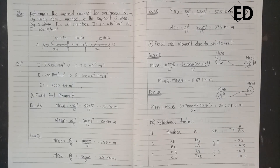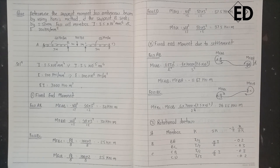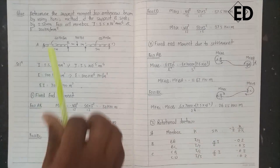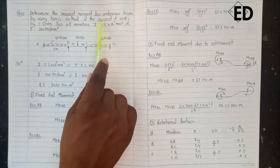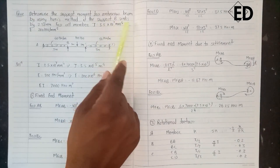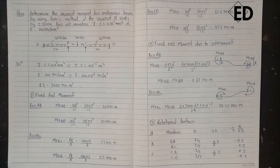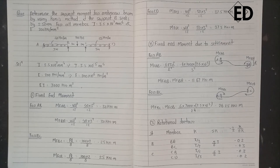Hello friends, welcome to Engineering Adda. Today we see how the support moment for the continuous beam is determined by using Kani's method when any support is sunk. In this question, it is given that support B is sunk by 2.5 mm. So let's solve it.